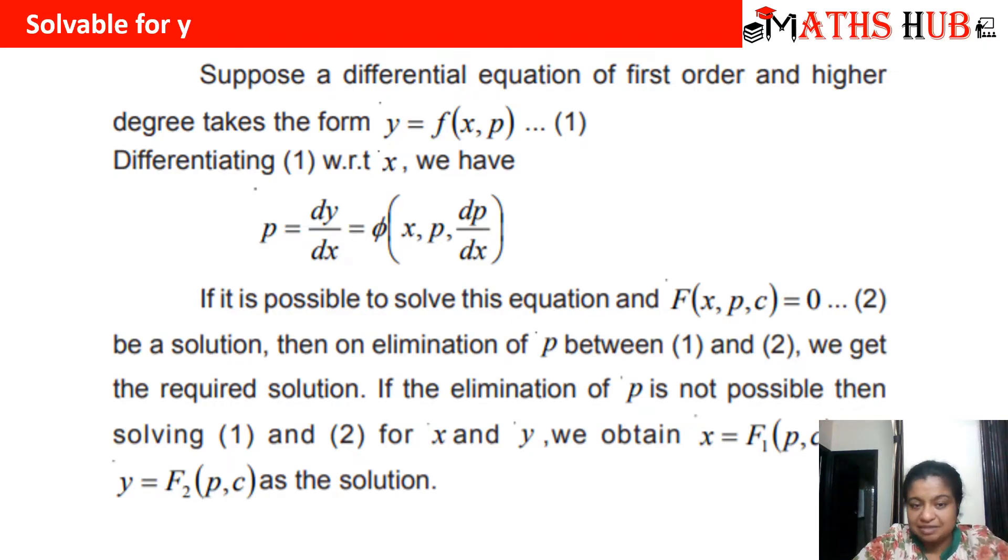Let us understand this method with the help of this exercise. You have y equals px plus a times p times 1 minus p. We have seen that in solvable by p method we were factorizing the expression in linear factors of p. If it is possible then the equation will be definitely solvable by p. But here we cannot make factors, but we can express y as a function of x and p.